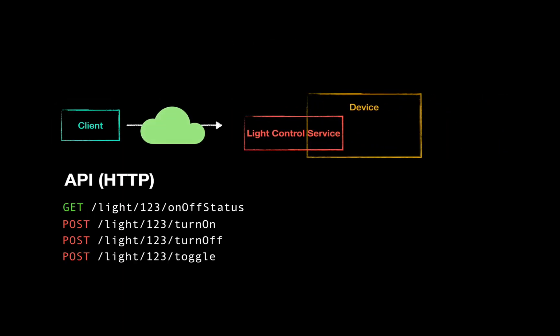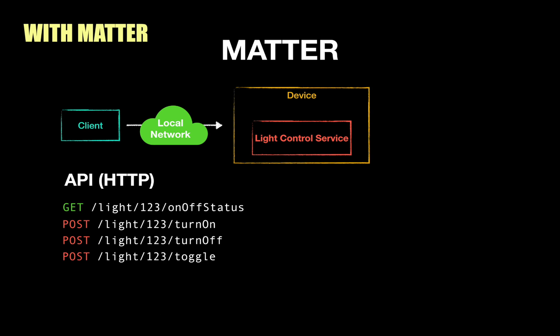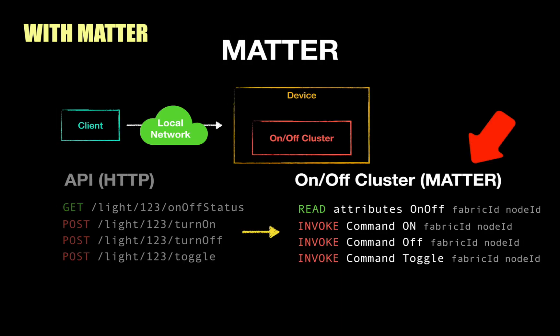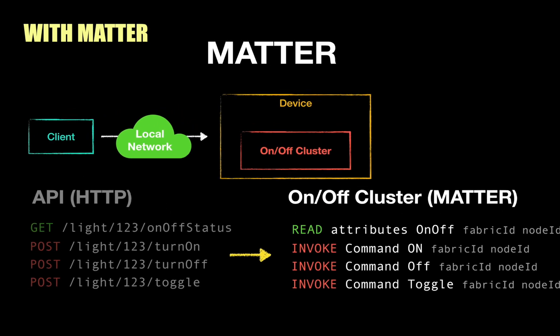With Matter, everything happens in the local network. Instead of hosting the service in the cloud, the service is hosted on the device itself. Instead of going through the public network, the command is sent via the local network to the device directly. Instead of communicating via HTTP, Matter has defined its own application layer protocol for the client and server to communicate. In Matter's specification, it defines the set of APIs the device needs to implement via a concept called cluster. A cluster is a set of APIs that the device should expose for a certain functionality. For example, if a device supports turn on and turn off, it needs to implement the on-off cluster.